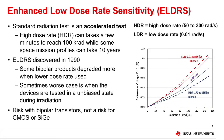One possible mitigation approach to these dose-dependent effects is to use shielding to protect the sensitive circuitry from radiation. The chart on the right provides an example of using different thicknesses of aluminum shielding on a LEO mission profile. As you can see, shielding does reduce the exposure, but is not a 100% mitigation approach.